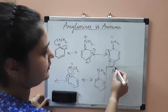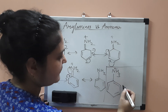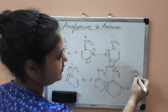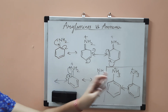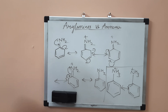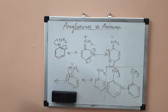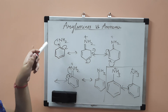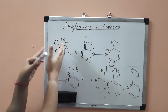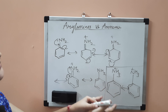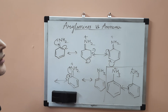The anilium ion has only two resonating structures. So it is less stable than the aniline or arylamine molecule. Based on this, we can infer that the aniline molecule will not readily accept a proton to become the anilium ion, and hence its basicity is less as compared to alkylamines and ammonia.